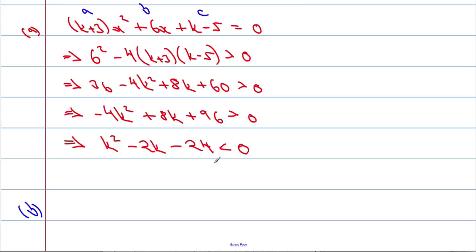So part b, k² - 2k - 24 < 0. So we're going to factorise this, it's like a quadratic, so we'll have k, and let's see, 6 and 4, we can add to make the 2, so (k - 6)(k + 4), we factorise that, must be less than 0.